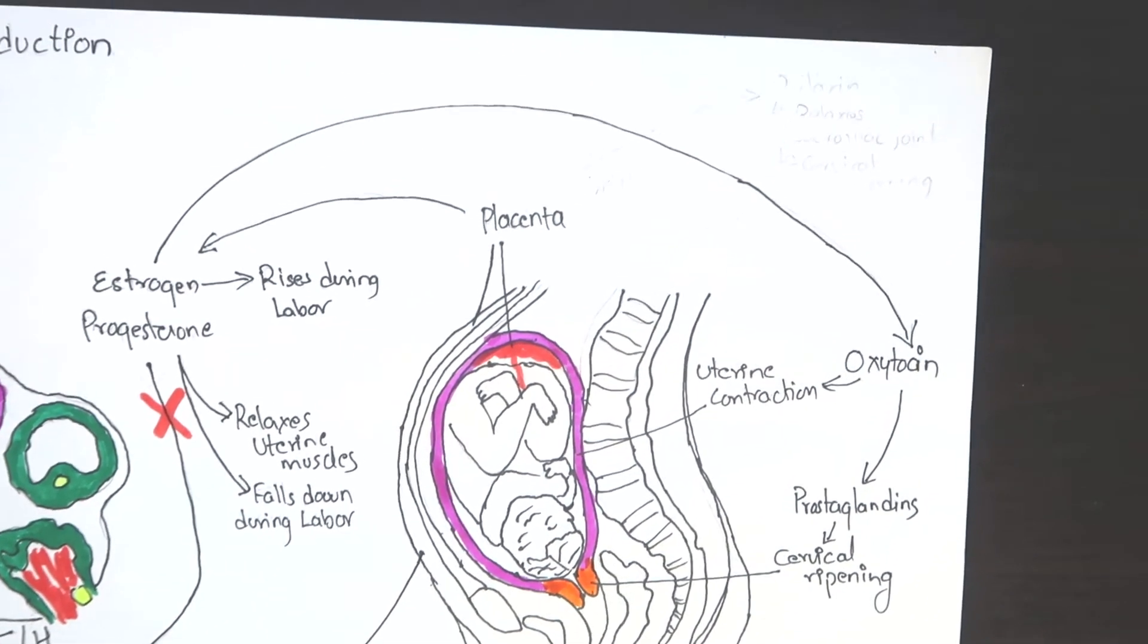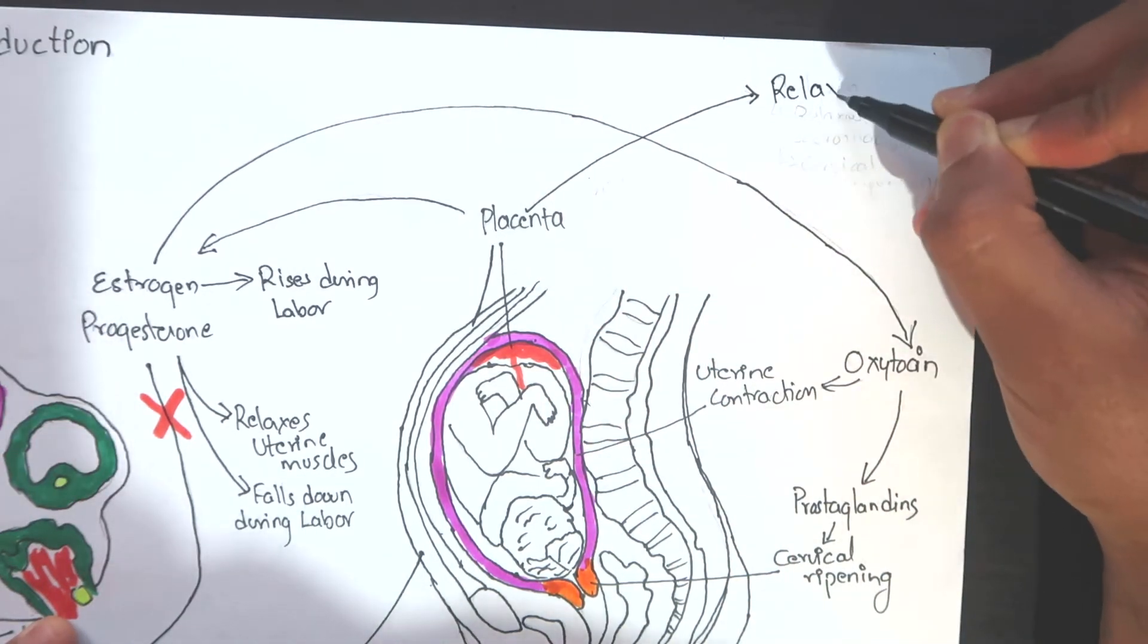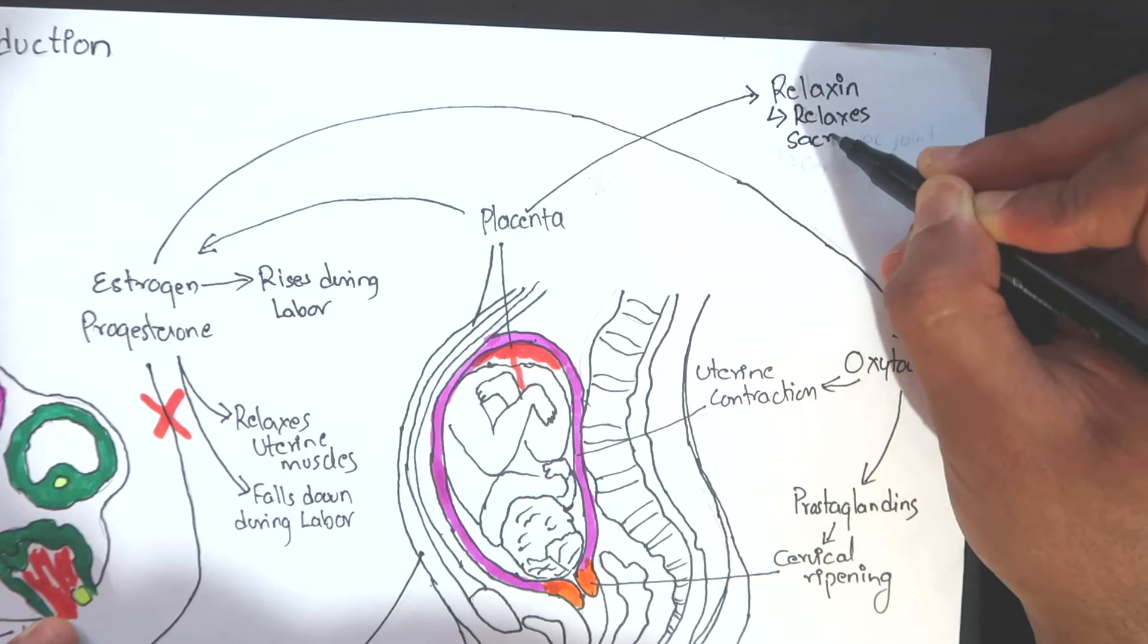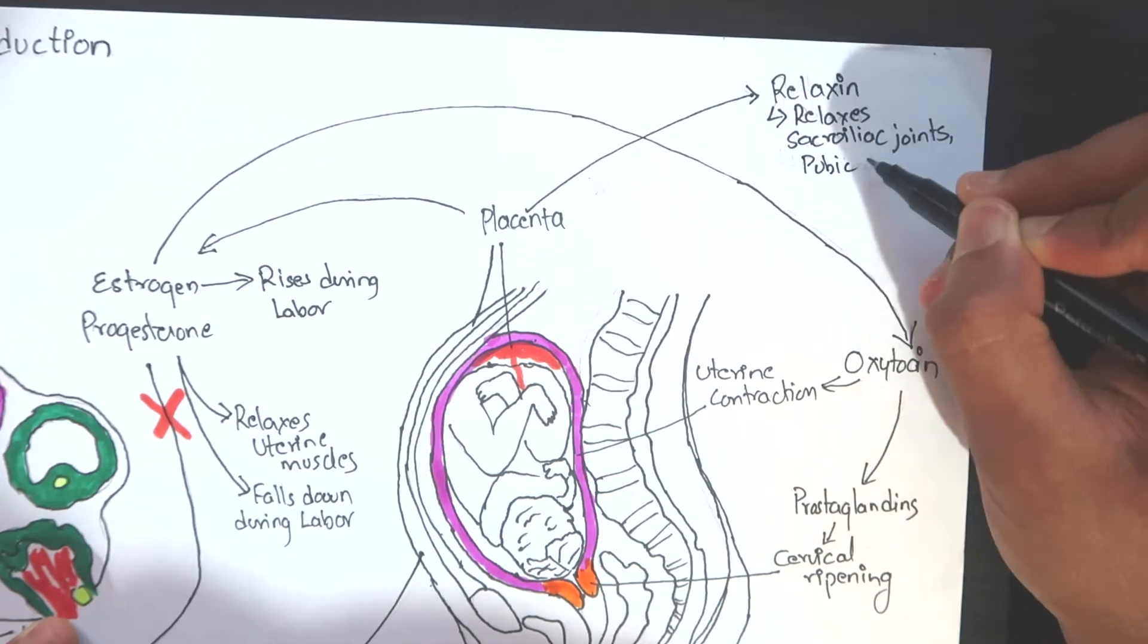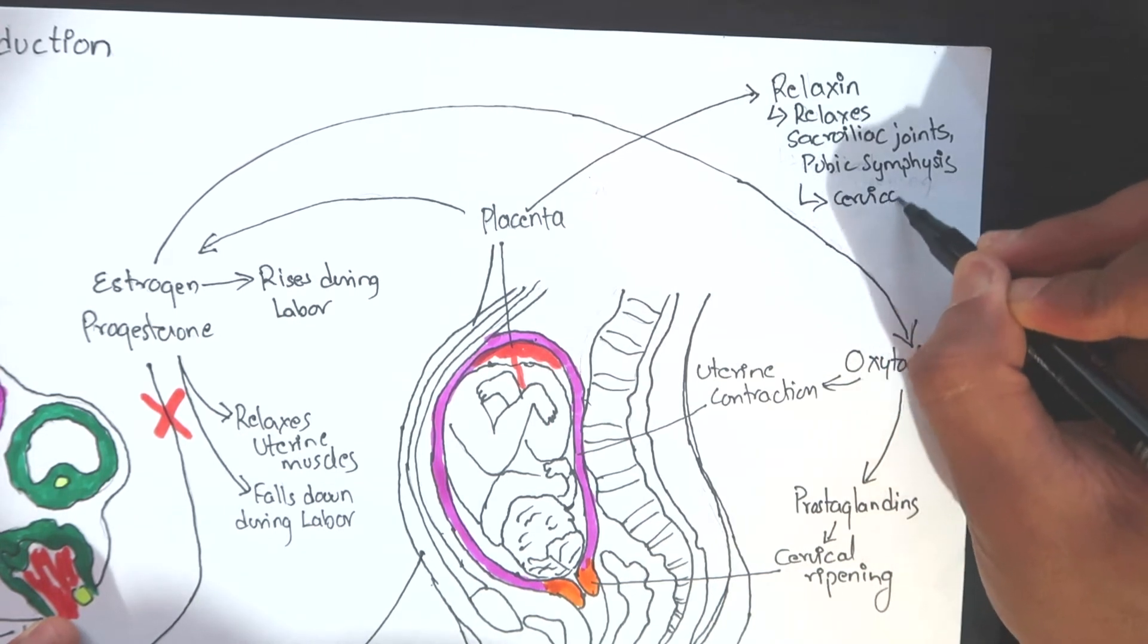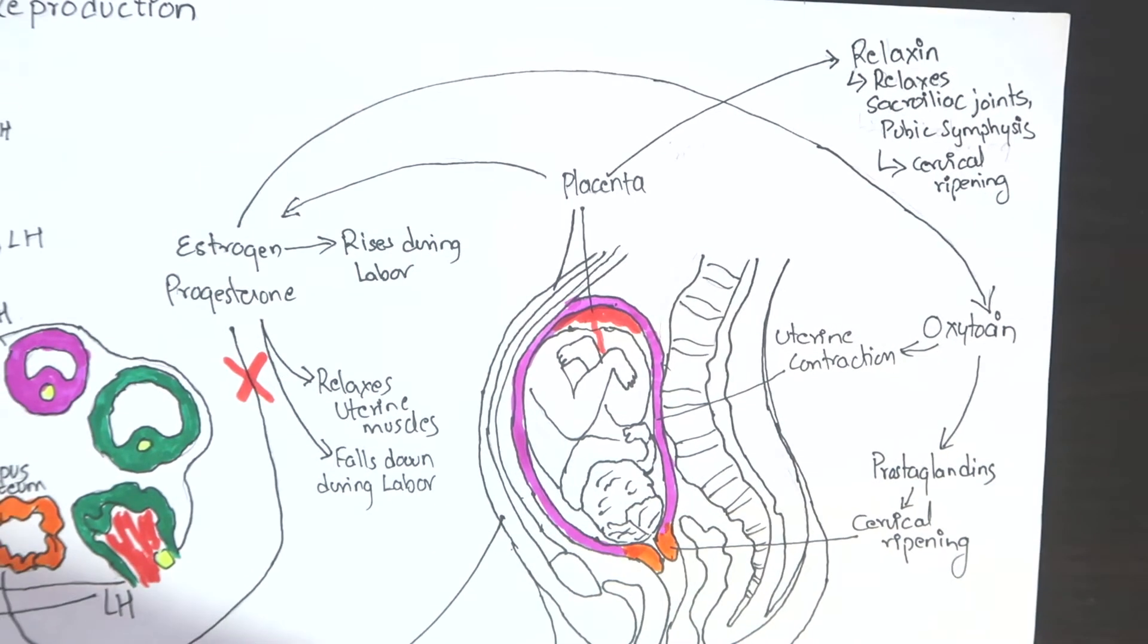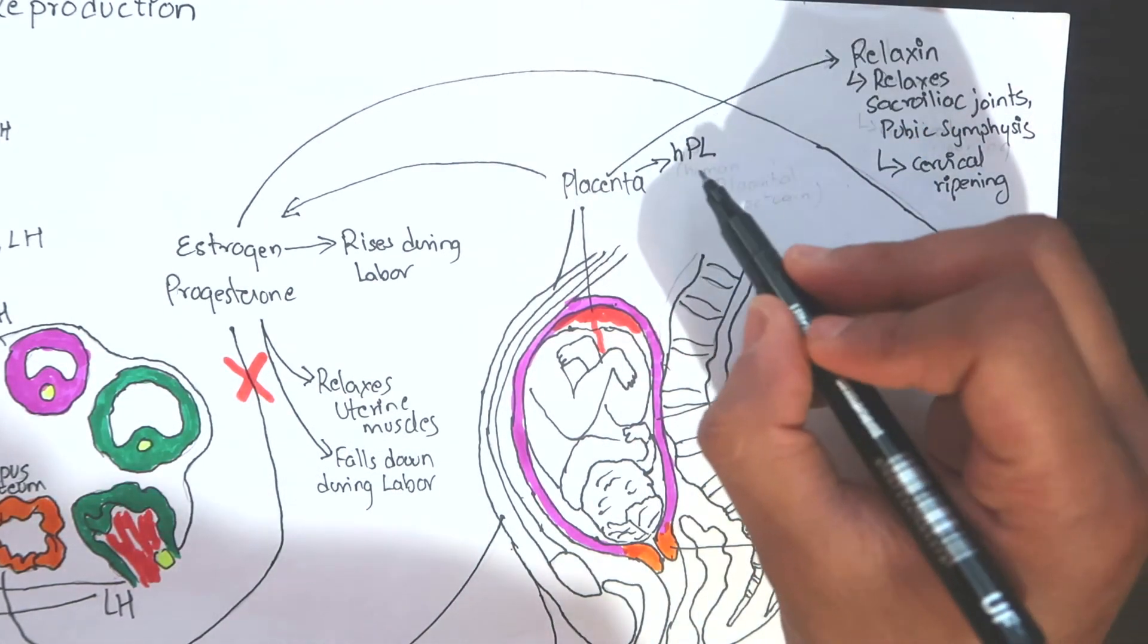Placenta also produces a hormone called relaxin. Relaxin, as the name suggests, relaxes the sacroiliac joints and ligaments, especially pubic symphysis. Thus, it increases the diameter of the pelvic outlet to accommodate the baby as well as to provide easy passage of the baby. It also helps in cervical ripening and widening.